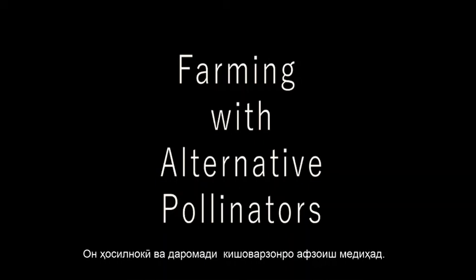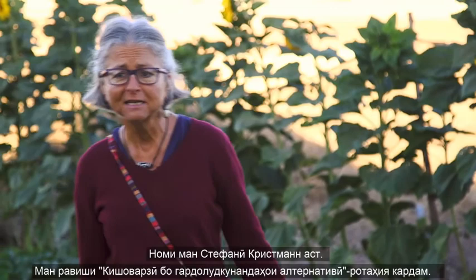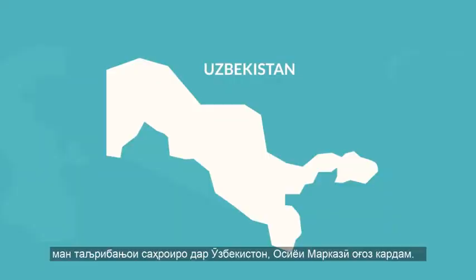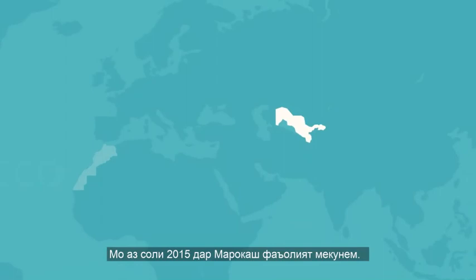The approach is called Farming with Alternative Pollinators, briefly FAP. My name is Stephanie Christmann. I developed FAP. In 2013, I started field trials in Uzbekistan, Central Asia. And since 2015, we do field trials here in Morocco. We do all field trials with real farmers on farm.